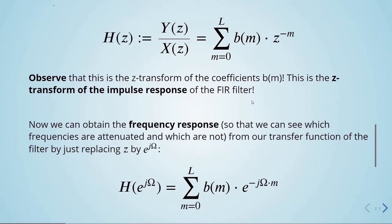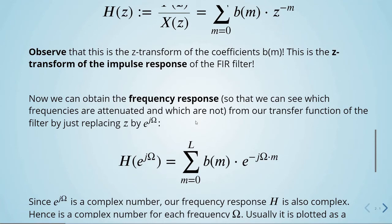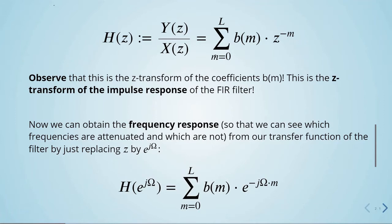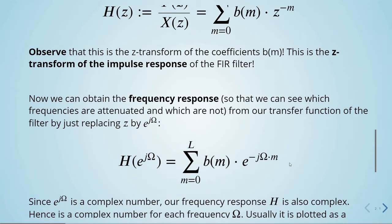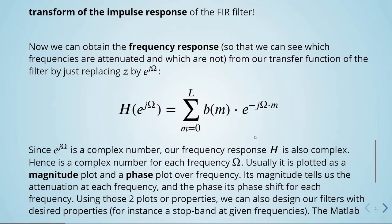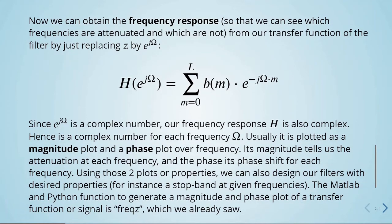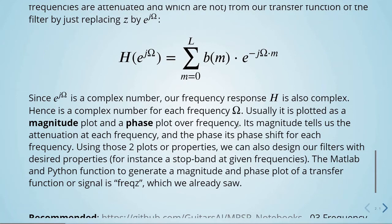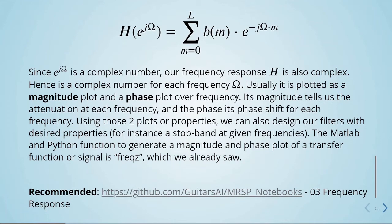We can obtain the frequency response — to see which frequencies are attenuated and which are not — from our transfer function by replacing z with e to the power of j omega. We replace z by e to the power of j omega and we have this sum. Since e to the power of j omega is a complex number, our frequency response is also complex — a complex number for each frequency omega. It is usually plotted as a magnitude plot and a phase plot over frequency. The magnitude tells us the attenuation at each frequency, and the phase tells us its phase shift. Using these two properties, we can design our filters with desired characteristics.